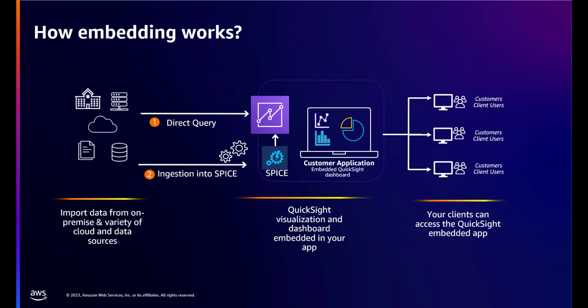QuickSight is capable of connecting to data from wherever it is, be it on premises or in the cloud. It supports two different modes to connect to data: live connection and a caching layer through its proprietary database called SPICE. SPICE is a super-fast parallel in-memory calculation engine that is built to scale for all your analytics needs. Once the data is in QuickSight, analysts can create dashboards that can then be embedded into your applications where your end users can consume them.